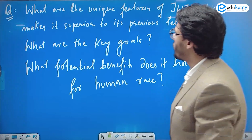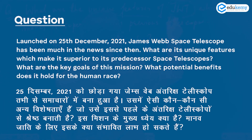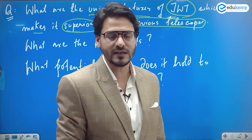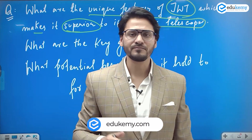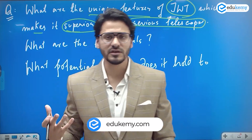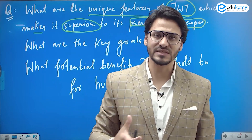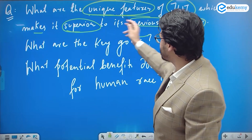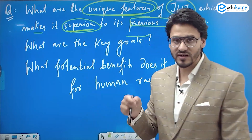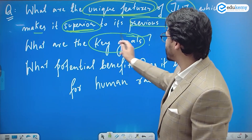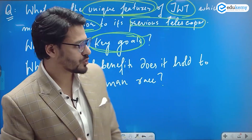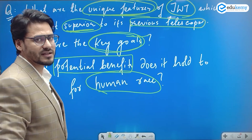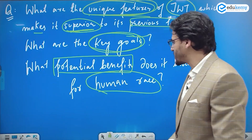The question asks: what are the unique features of the James Webb Telescope that make it superior to previous telescopes like the Chandra X-ray Observatory, Spitzer Telescope, and Hubble Space Telescope? That is the first part. The second part asks for the key goals and objectives of JWST. The third part asks about the potential benefits it holds for the human race.